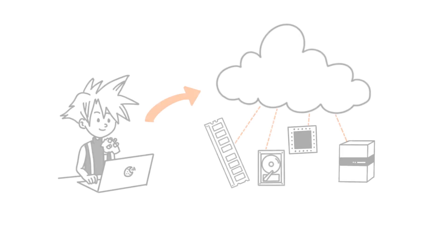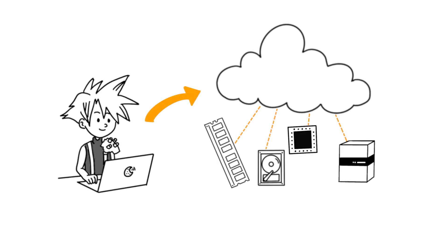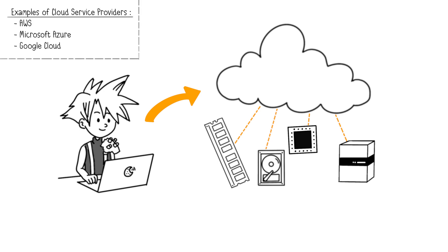The cloud makes available a set of computing resources as needed by the client, such as servers, storage, or ready-to-use applications. When we say a service is in the cloud, it means that the means of production to provide this service are managed and hosted by the cloud service provider, for example AWS, Microsoft Azure, or Google Cloud. There are several types of usage models based on the technical layer they offer, each playing a specific role.